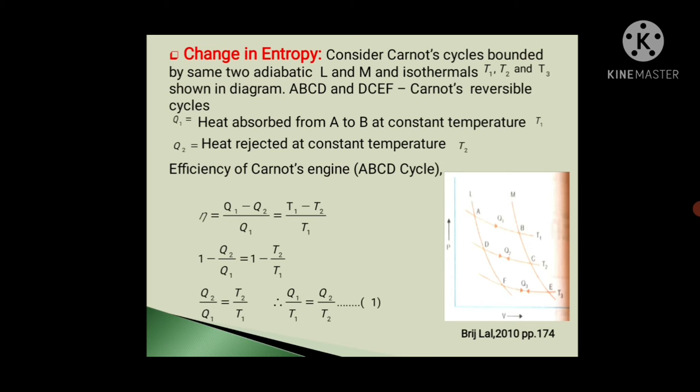So, here Q1 is heat absorbed from A to B by the working substance at constant temperature T1, and Q2 is amount of heat rejected to the sink at constant temperature T2.